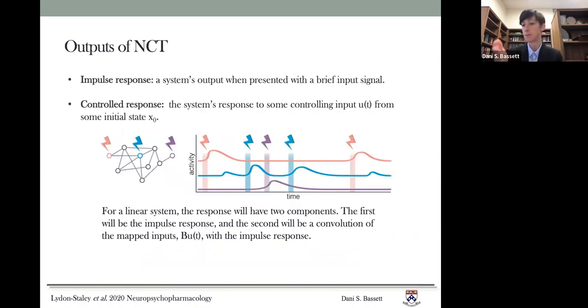The second output is a controlled response. So not just a ping to the system and see what happens, but a controlled response. This is the system's response to some controlling input U from some initial state X naught for the linear system that I showed you earlier. The response will have two different components. The first will be the impulse response. So that was the simplest output. And then the second will be a convolution of the mapped inputs B U with the impulse response.